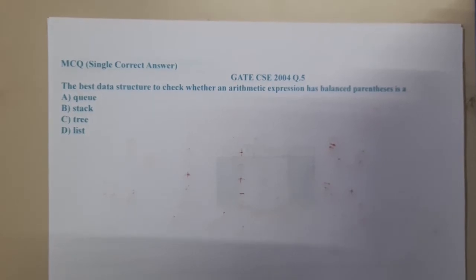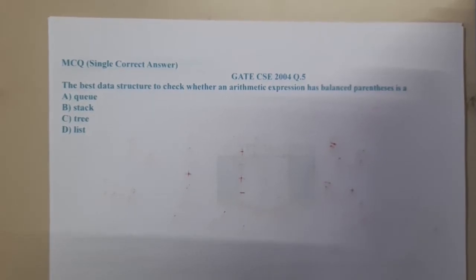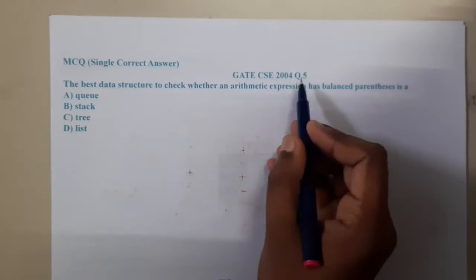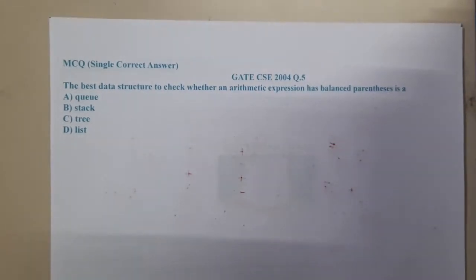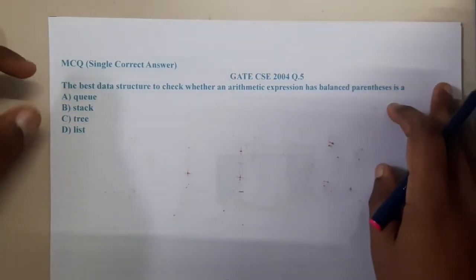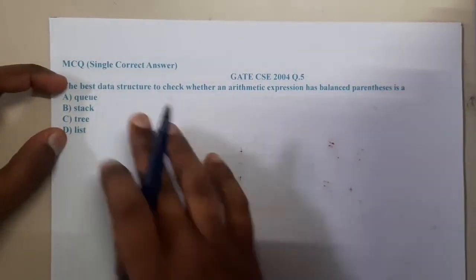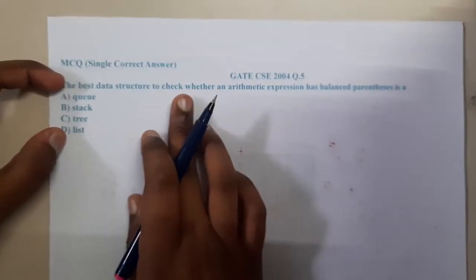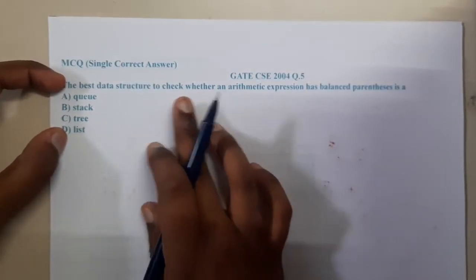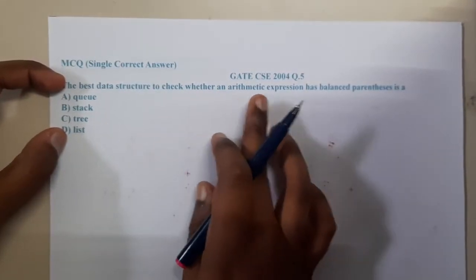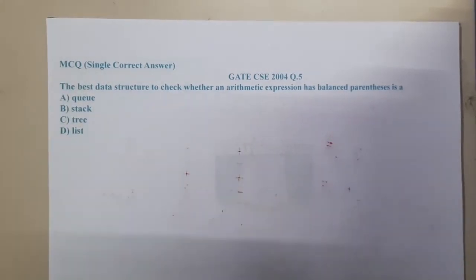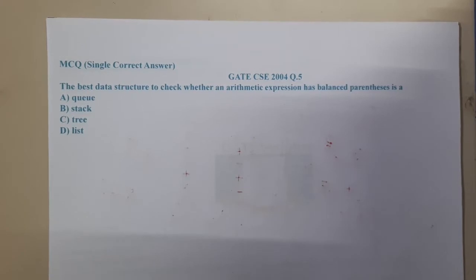Hello guys, we are back with our next lecture. In this lecture let us go through the next question — a GATE CSE 2004 question. The question is: what is the best data structure to check whether an arithmetic expression has balanced parentheses or not?